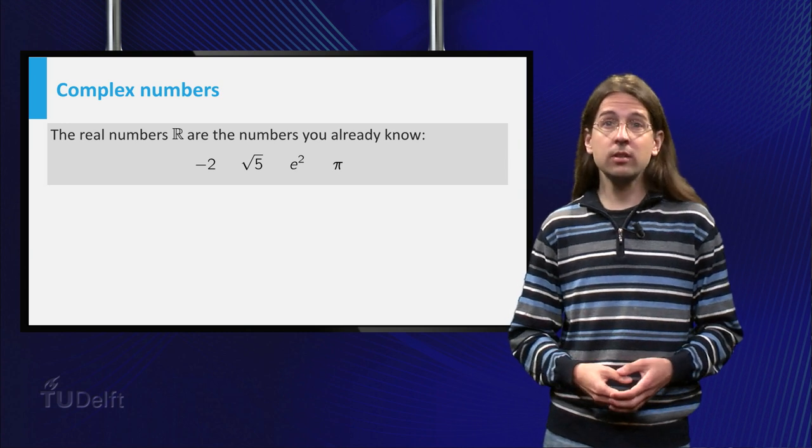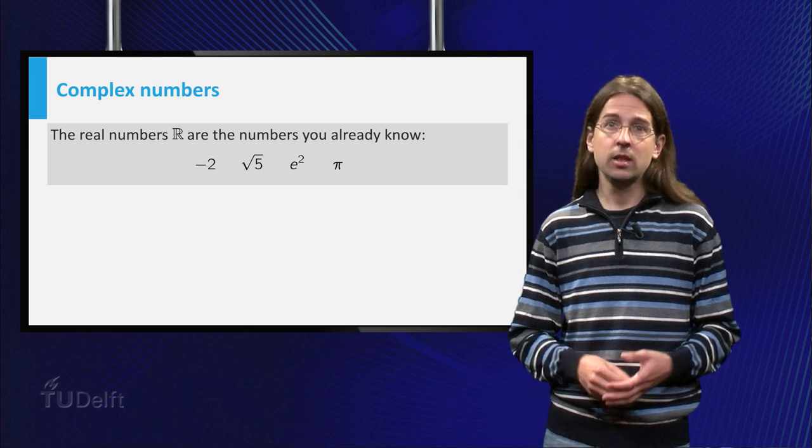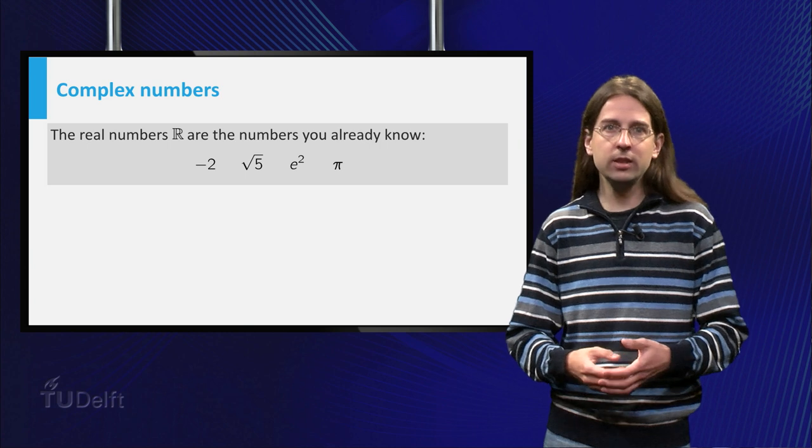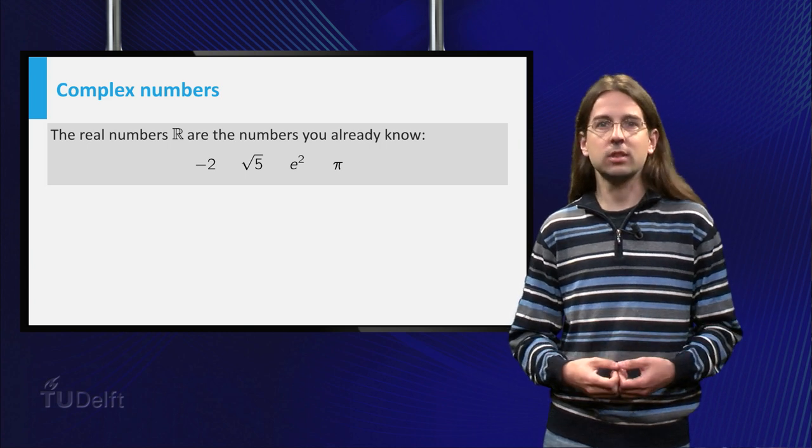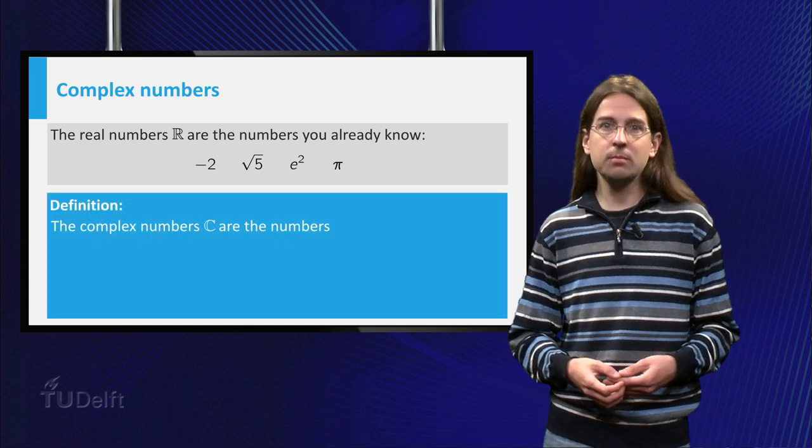The real numbers are the numbers that you already know, where we do not use i, whereas complex numbers will be those that you can make using i as well. Let us see what a general complex number looks like. We want to be able to add, multiply, etc. complex numbers.